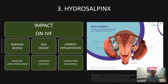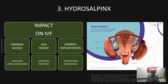The third pathology is hydrosalpinx, where you have a collection of fluid inside the tube. This fluid can be toxic to the embryo. The main effect of hydrosalpinx is reduction of implantation because the fluid can flush back into the uterus and wash away the embryo or be detrimental to it. Patients with untreated hydrosalpinx have a 50% less chance of success in IVF treatment. That's why we recommend removing the hydrosalpinx or the tube before embryo transfer.